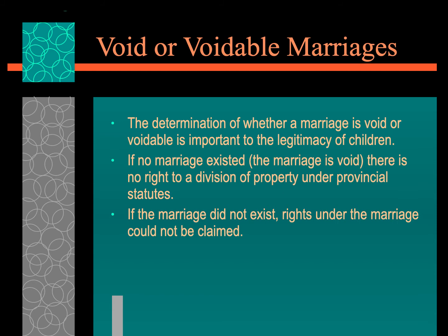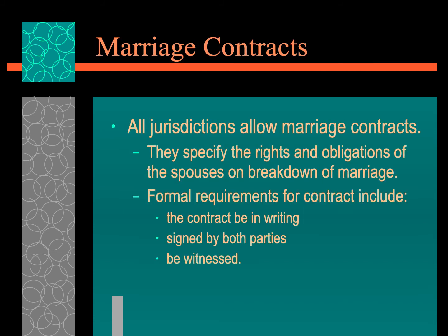A common trend in Canadian society now is that before people enter into a common-law relationship or an actual marriage, both sides will draw up their own finances. A prenuptial agreement is made before a marriage — both parties determine how they will divide their assets should the marriage end. It also lays out what each person owned prior to the agreement, so that pre-existing property or finances would not be subject to division in the case of divorce.